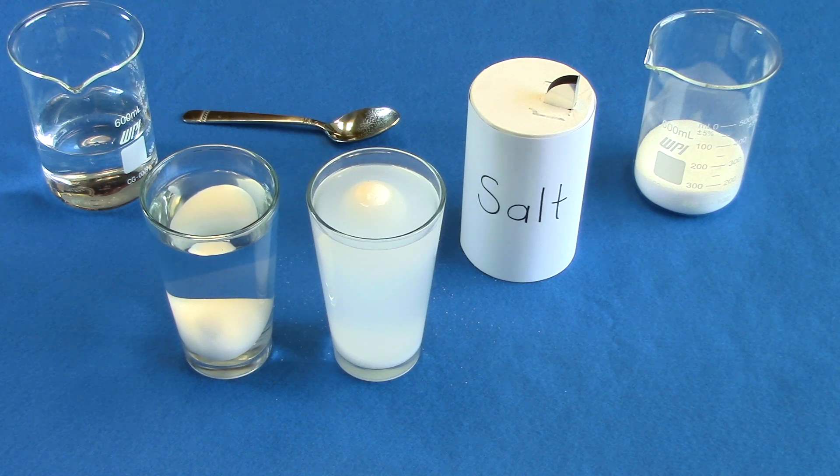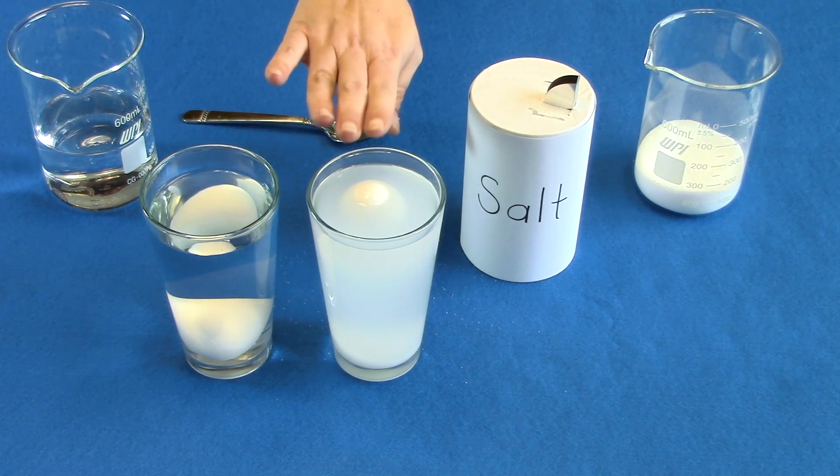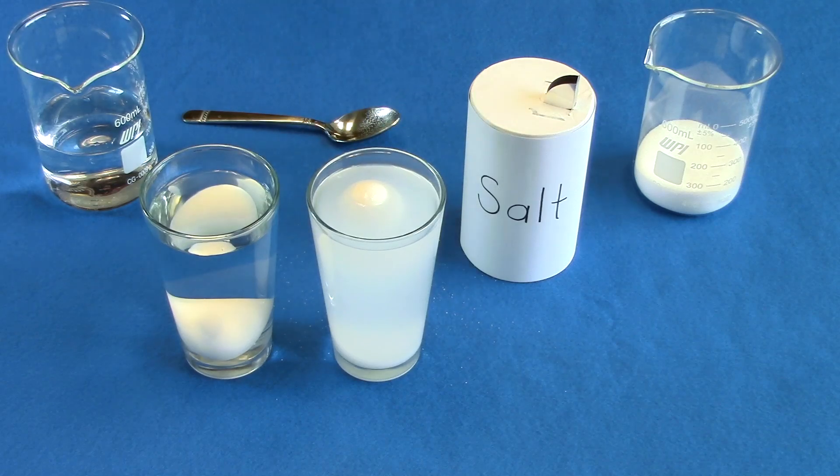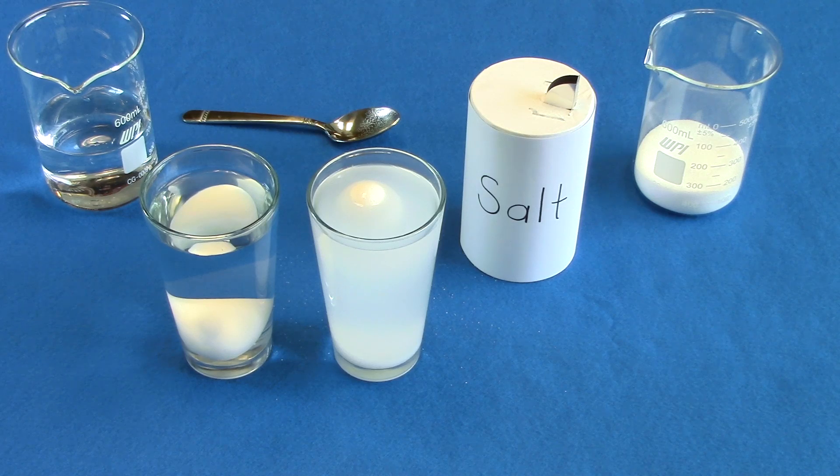The denser the liquid, the easier it is for an object to float in it. Now that you've seen for yourself how to make an egg float, can you explain why you can float more easily in the ocean than you can in a freshwater lake? Bet you can.